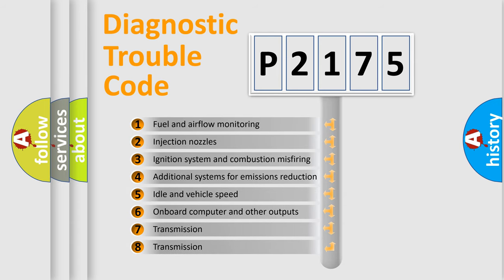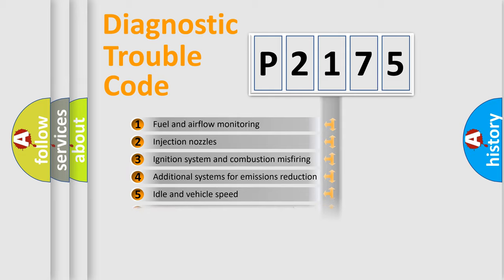The third character specifies a subset of errors. The distribution shown is valid only for the standardized DTC code.